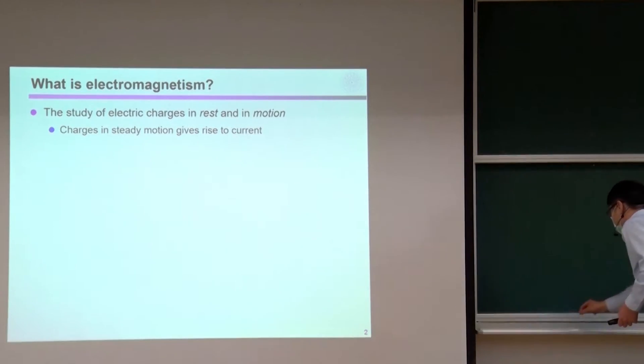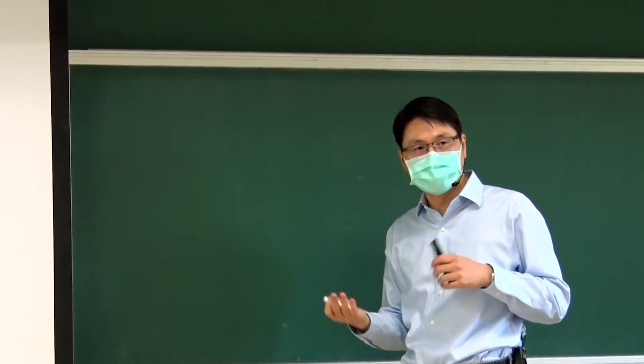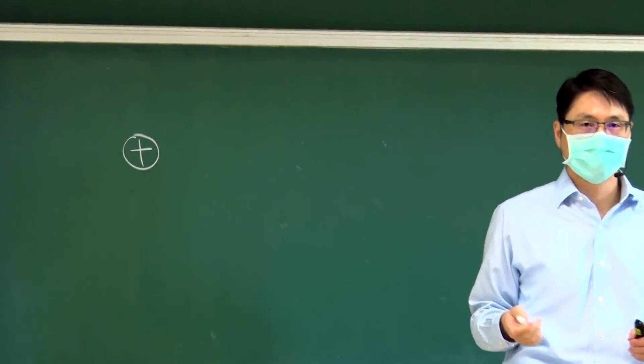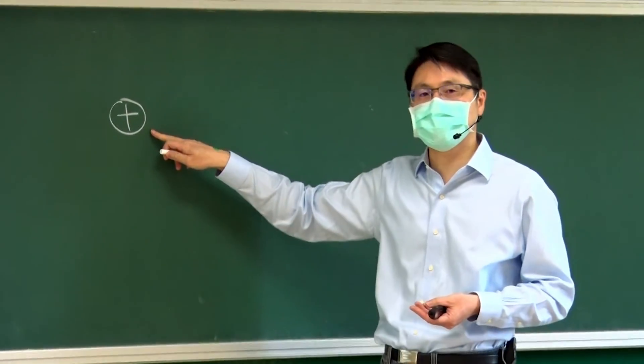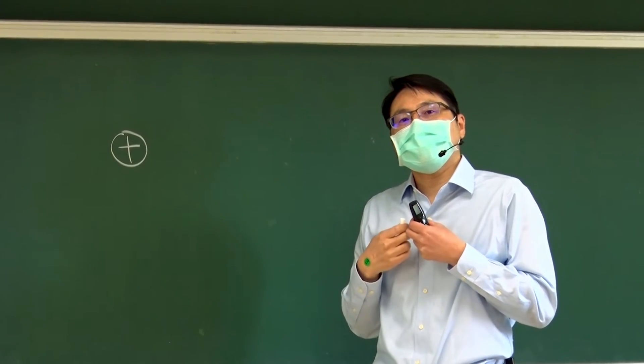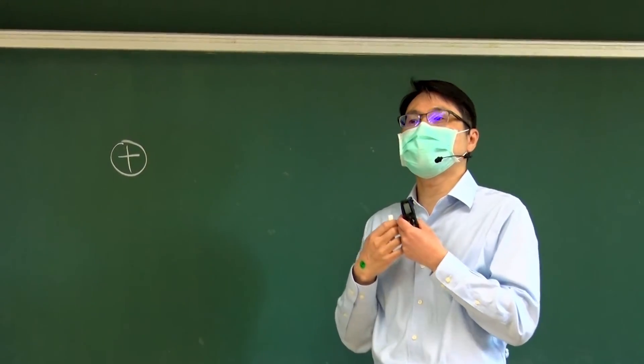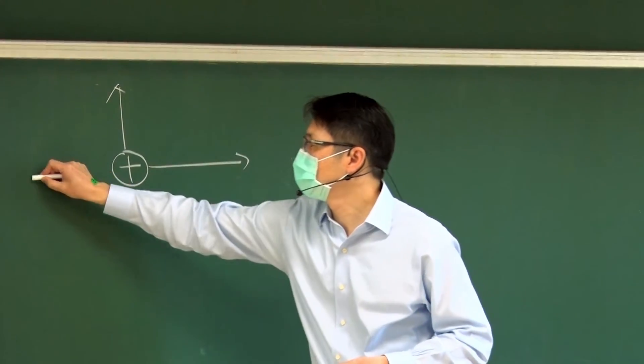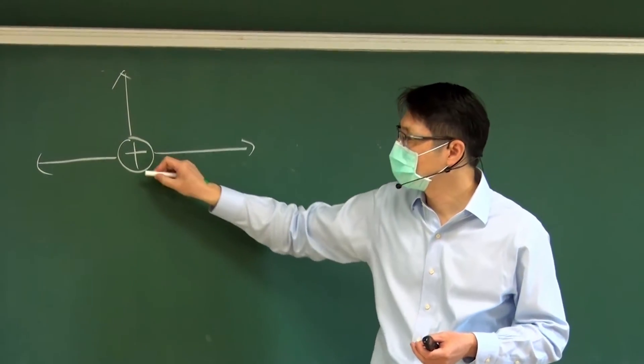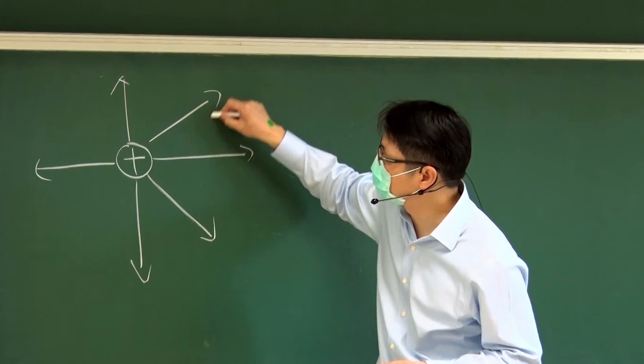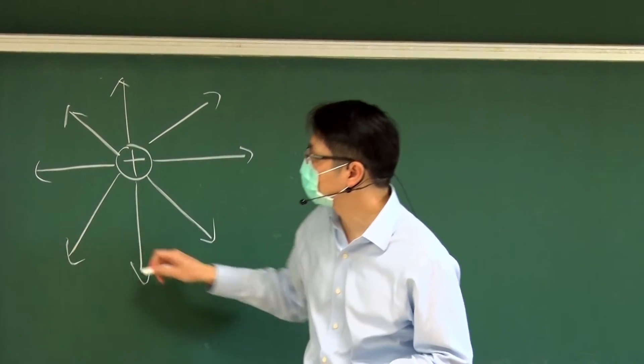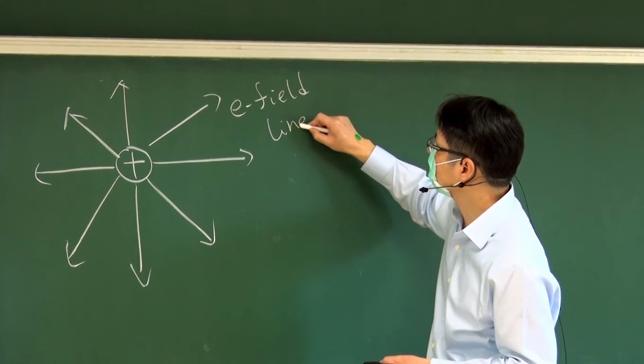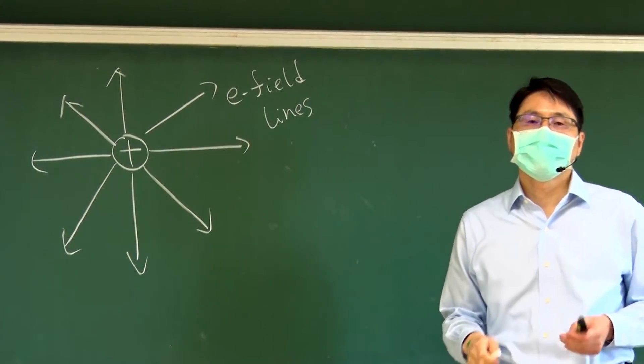So why am I separating the two? Probably you learned it before starting from high school. You already know that once you have a charge, it actually establishes some kind of field distributions. So if you have a single charge with positive sign, that charge would emit a lot of so-called E field lines. That's something you already know.